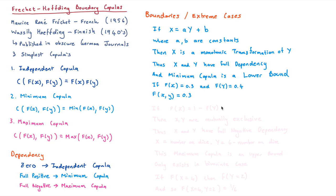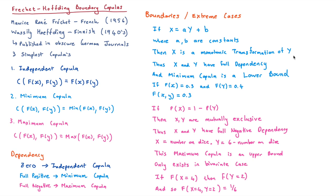For the maximum copula, the probability of X occurring equals one minus the probability of Y occurring. In statistical terms, X and Y are mutually exclusive, giving full negative dependency. Think of X as the number on a dice and Y as six minus that number — as X increases, Y decreases. This forms an upper bound and only exists in the bivariate case, because with more than two variables, full negative dependency becomes impossible — if one is the exact opposite of another, what does the third thing do?